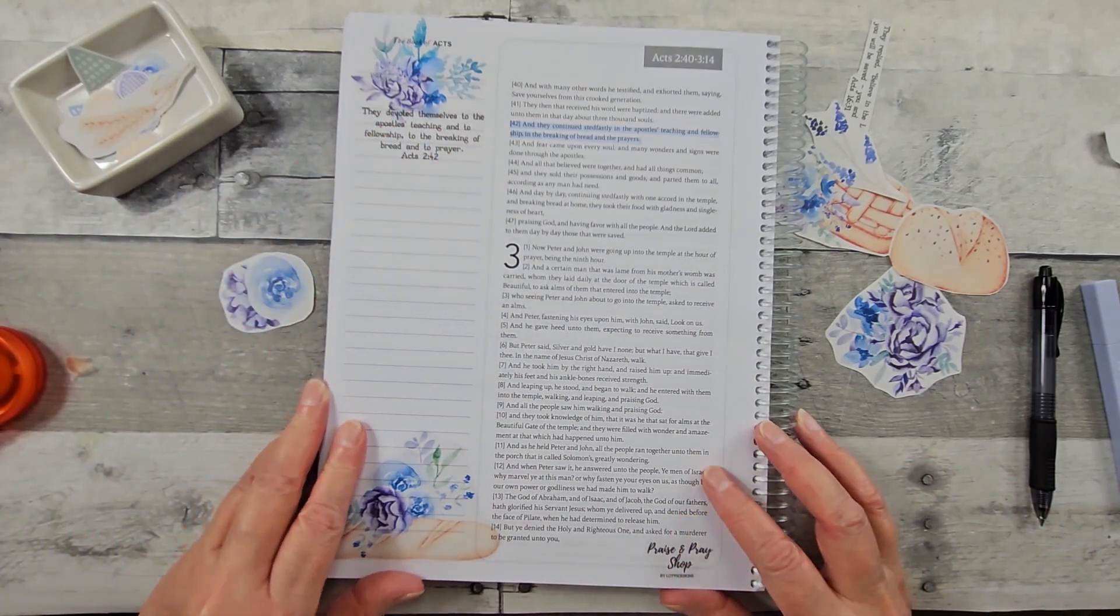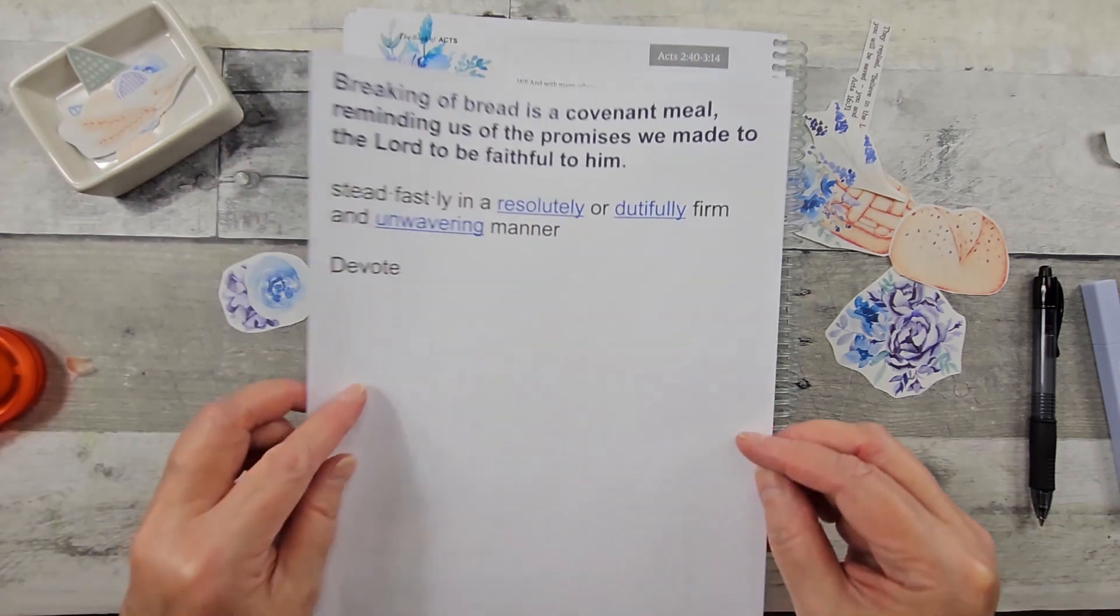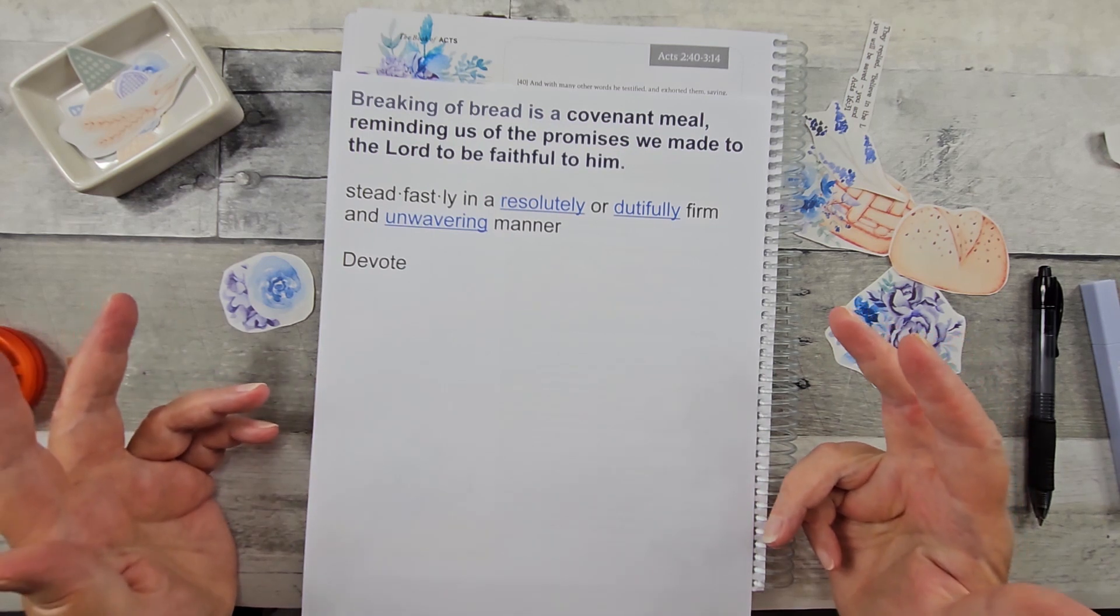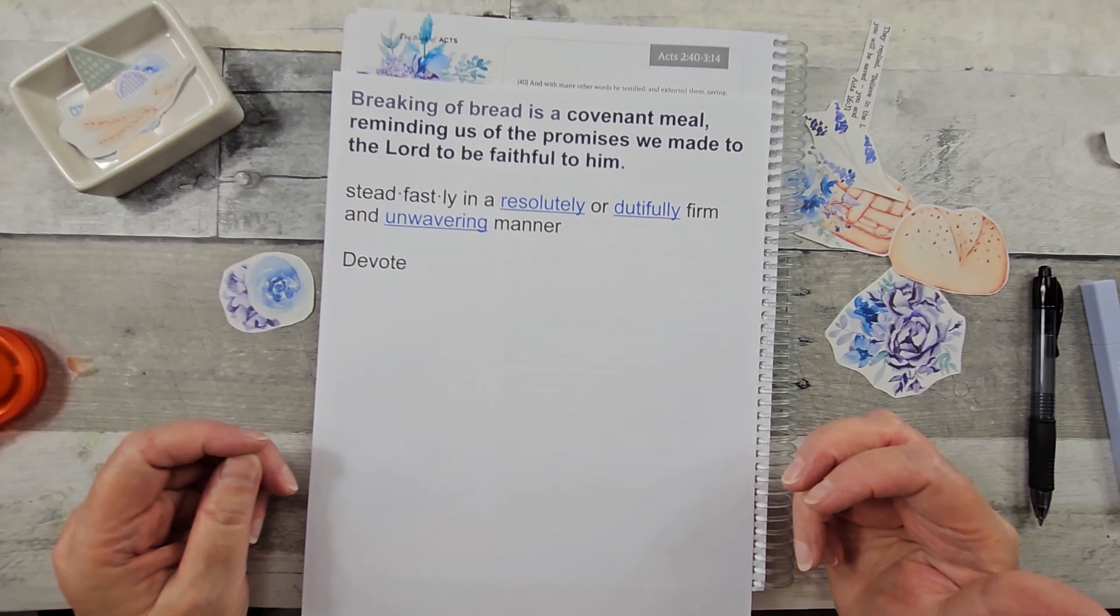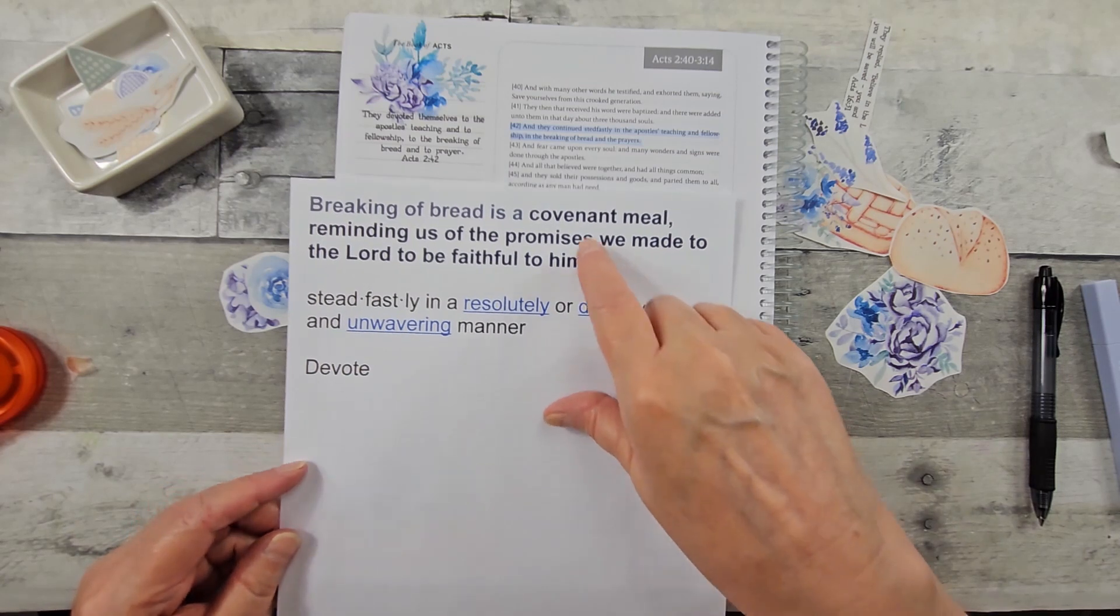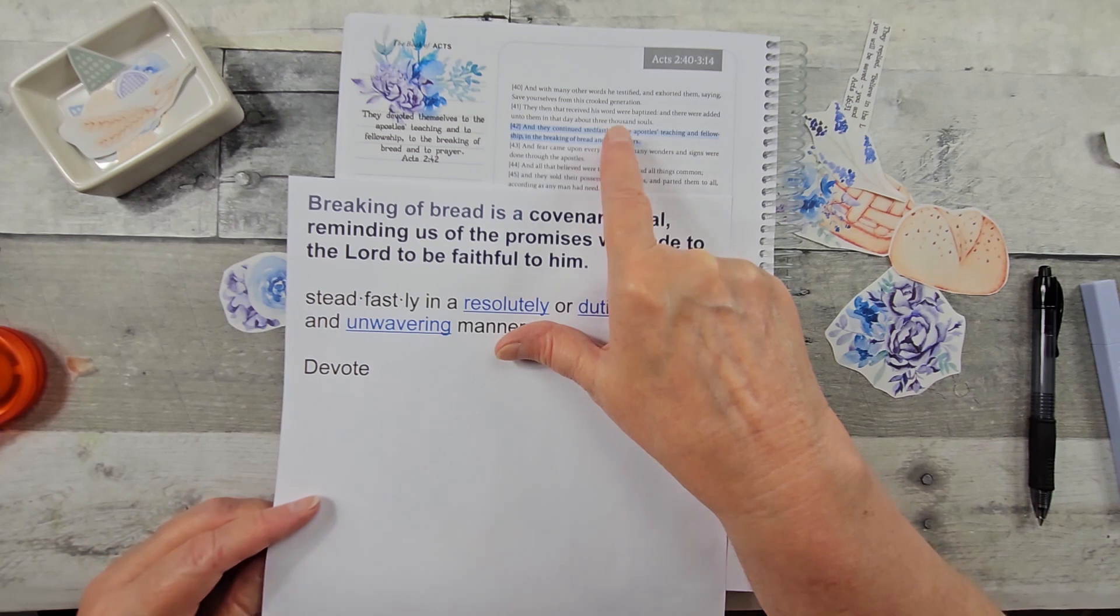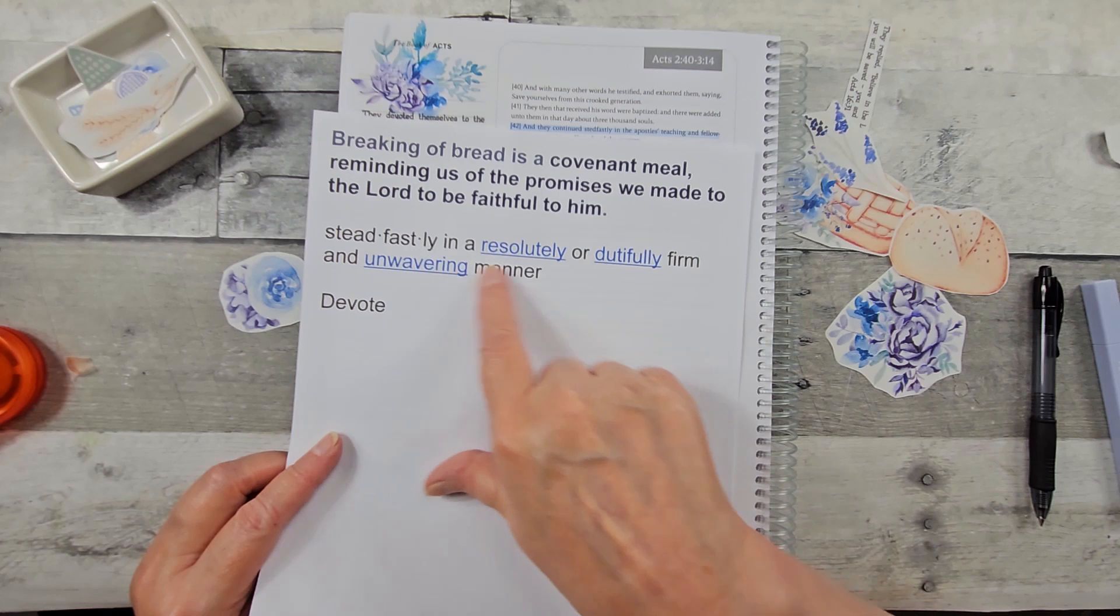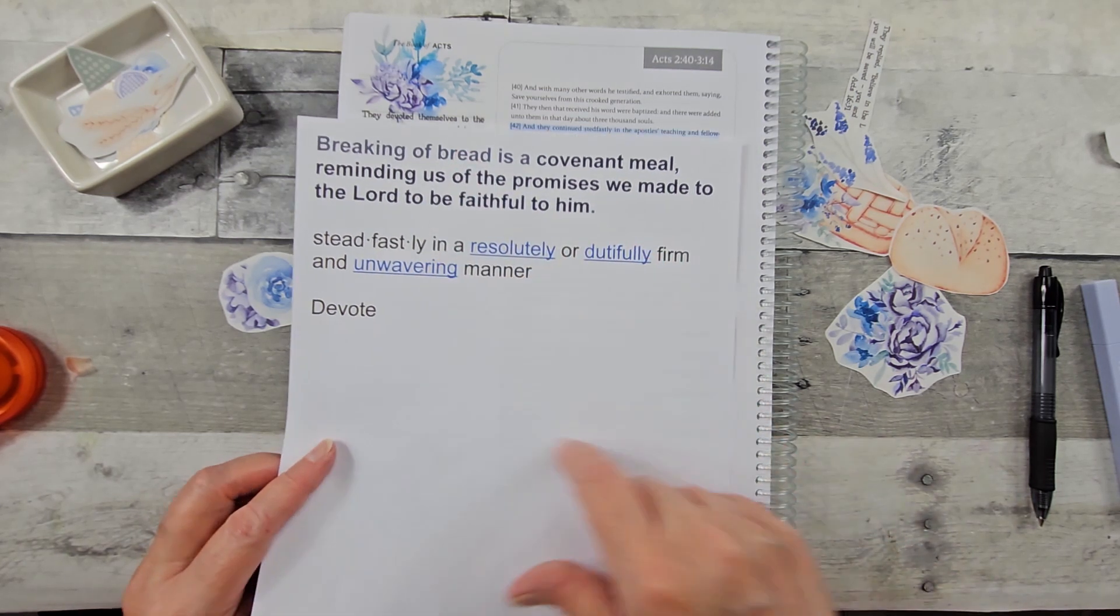Alright, I think I'm going to get to my journaling. So I did do a little research as to what is the meaning of the breaking of bread. Breaking of bread is a covenant meal, reminding us of the promises we made to the Lord to be faithful to him. Then also, this particular translation uses the word steadfastly. I noted in some of the other translations it uses the word devote. So I chose to write the definition of steadfastly.